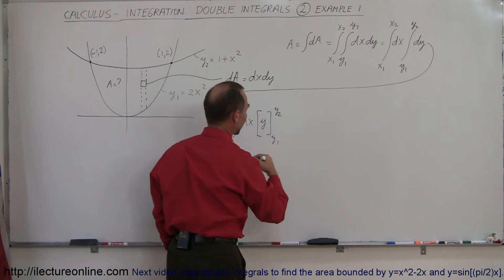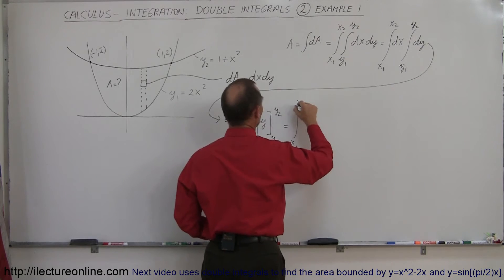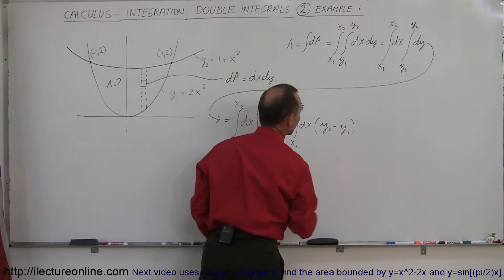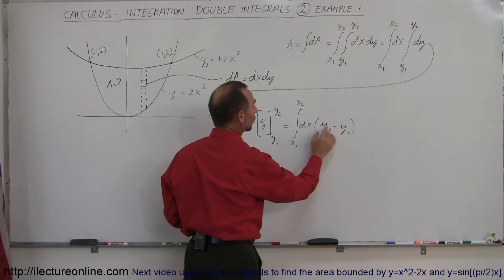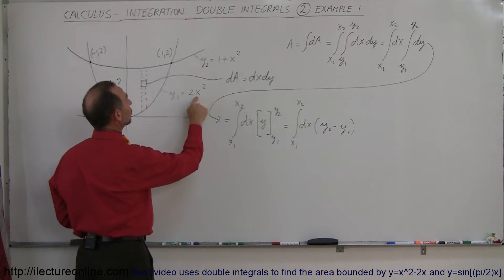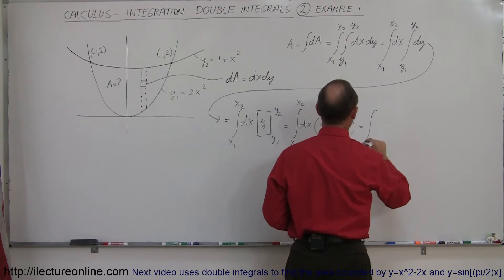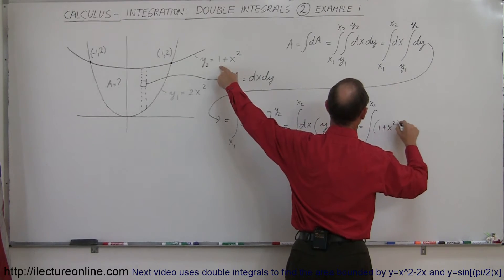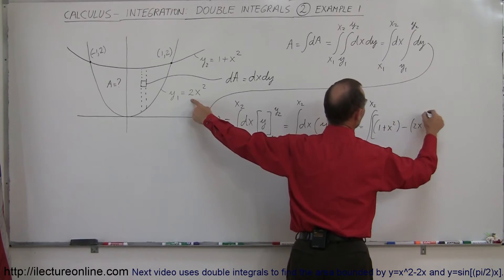Plugging in the upper and lower limits, this becomes the integral from x1 to x2 of (y2 minus y1) dx. Now we want to integrate a second time, but we can't integrate a y variable with dx — we have to find the x equivalents. Luckily, we have the equations: y1 equals 2x squared and y2 equals 1 plus x squared. So this becomes the integral from x1 to x2 of (1 plus x squared minus 2x squared) dx.